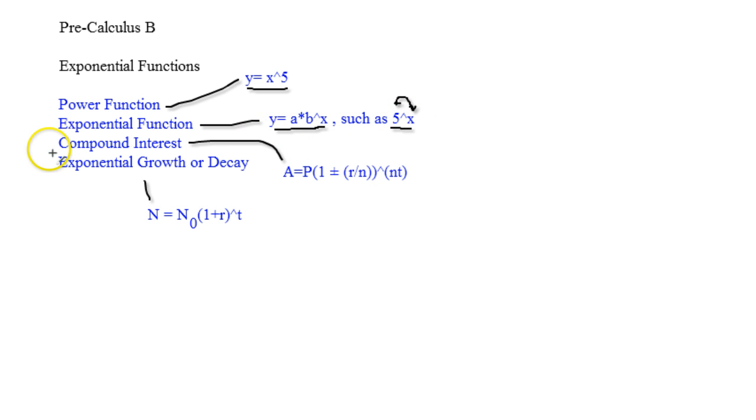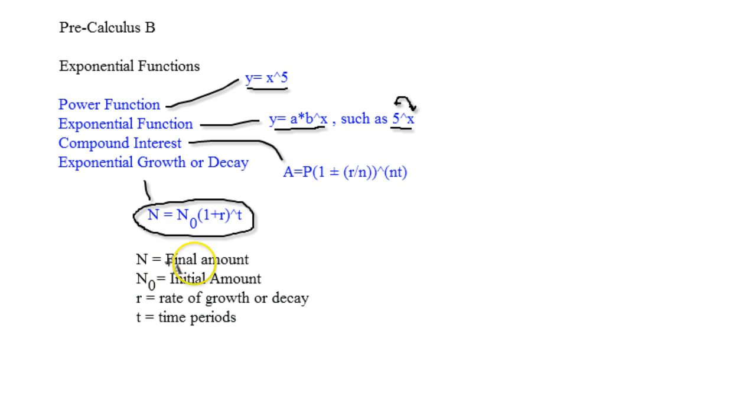Now there's a couple of unique kinds of exponential functions. There's the function that is exponential growth or decay. Now let's define some of the terms. Now exponential growth and decay, the n stands for the final amount, n sub zero is the initial amount, r is the rate of growth or decay, and t is the time periods.